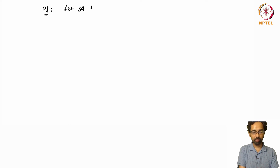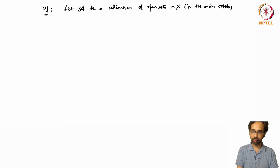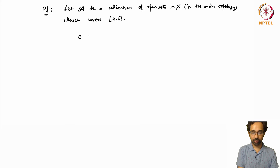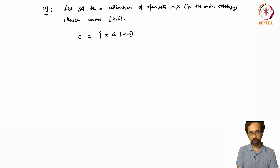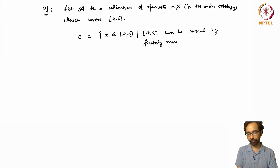To start the proof, let A be a collection of open sets in X in the order topology which covers the set [A, B]. We define a set C, which is the set of points x in the interval [A, B] such that the closed interval [A, x] can be covered by finitely many open sets in A.